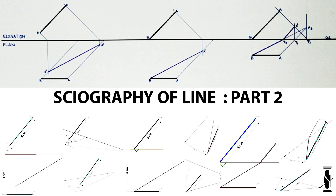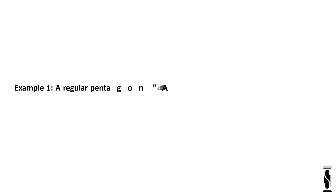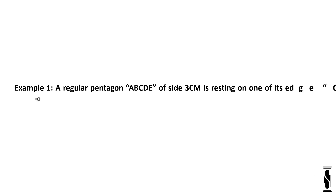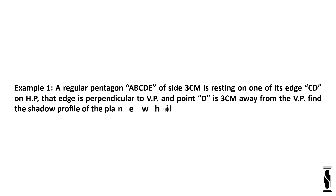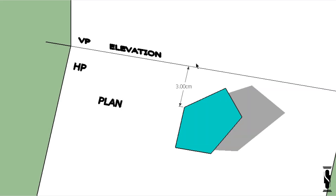The link is given in the description box. Let's start with Example 1. A regular pentagon ABCDE of side 3 cm is resting on one of its edges CD on HP. That edge is perpendicular to VP and point D is 3 cm away from VP. Find the shadow profile of the plane while the plane makes an angle of 30 degrees with HP.